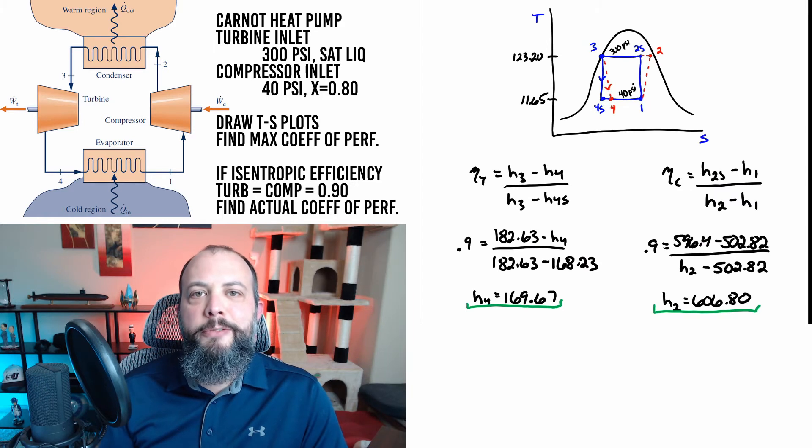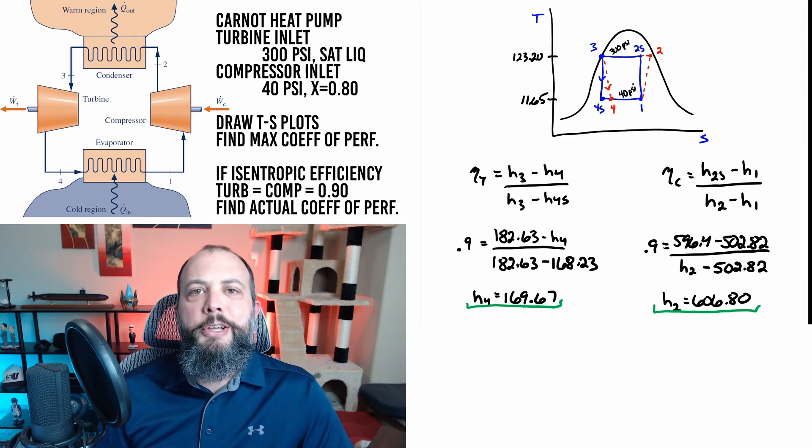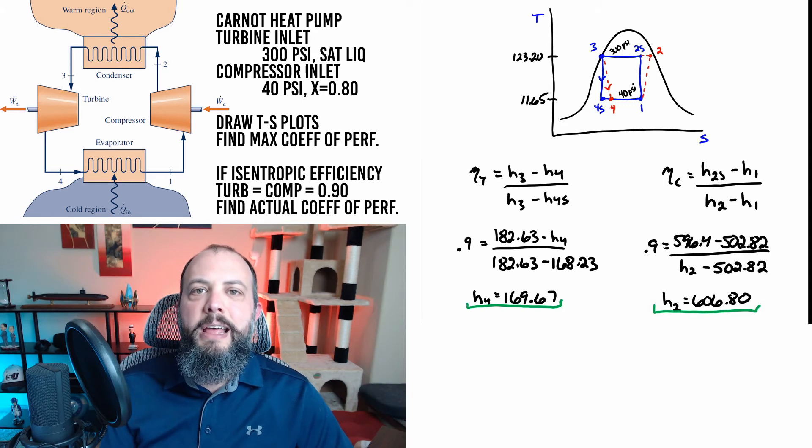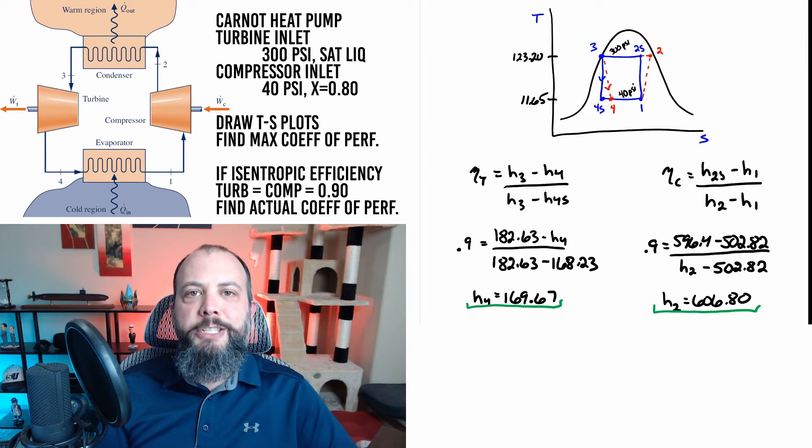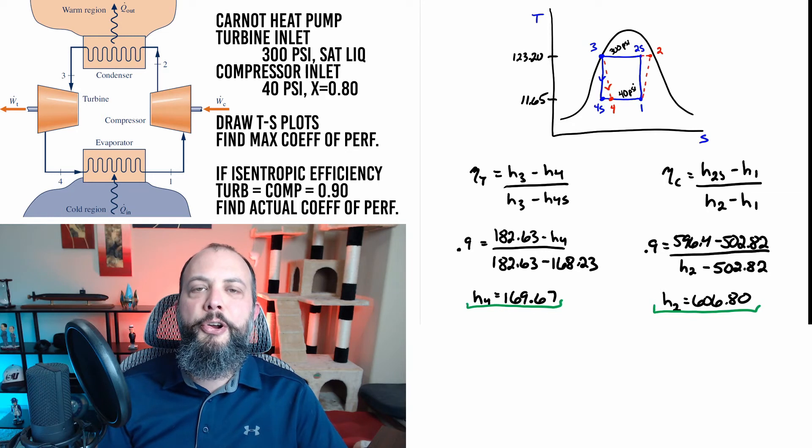And now I've given myself a fresh page and written down the isentropic efficiency equations for the turbine on the left and the compressor on the right. Now first these are going to look a little strange because on the turbine equation the s term is in the denominator and on the compressor equation the s term is in the numerator. And this has to do with how turbines and compressors function.